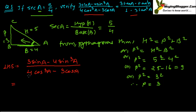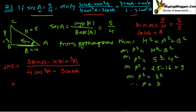Let's find the values we need. sin A is perpendicular upon hypotenuse, which is 3 upon 5. cos A is base upon hypotenuse, which is 4 upon 5. These are the fundamental values we need — sin A equals 3/5 and cos A equals 4/5.